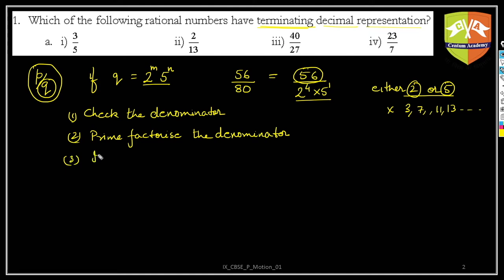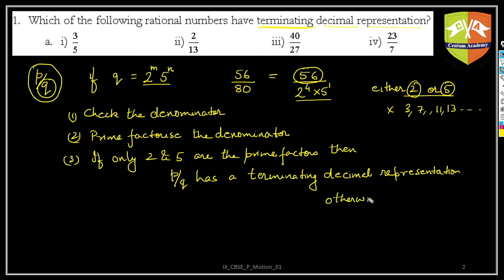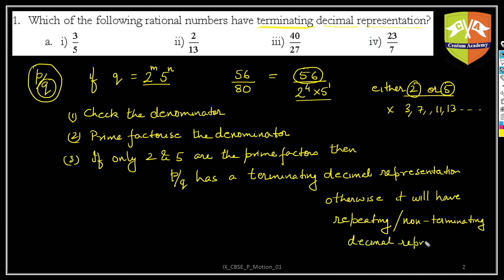If only 2 and 5 are the prime factors of the denominator, then p/q has a terminating decimal representation. Otherwise, it will have a non-terminating repeating decimal representation.